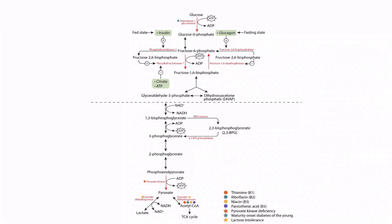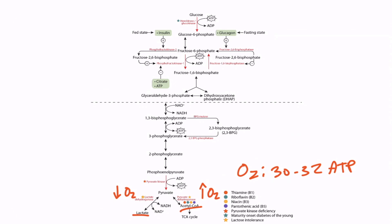After pyruvate is formed, it can be converted into lactate or acetyl-CoA, depending on the conditions of the cell. If the cell doesn't have enough oxygen, then lactate is formed. If there is enough oxygen, or it's under aerobic conditions, then acetyl-CoA is formed, which can then be used in the TCA cycle. Under aerobic conditions, glucose metabolism normally generates 30 to 32 ATP. This varies because the NADH produced during glycolysis is ultimately used by the electron transport chain to produce ATP, and the way in which NADH enters the mitochondria can vary — some cells use the malate shuttle, others use the glycerol-3-phosphate shuttle. Under anaerobic conditions, glucose metabolism only generates two net ATP. We'll discuss pyruvate metabolism in more detail in a separate video.